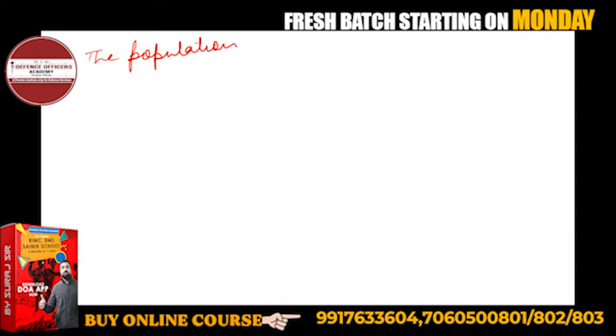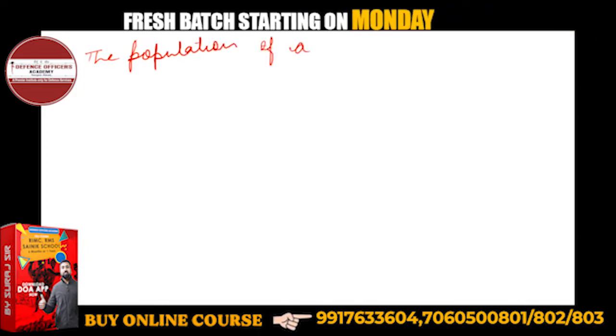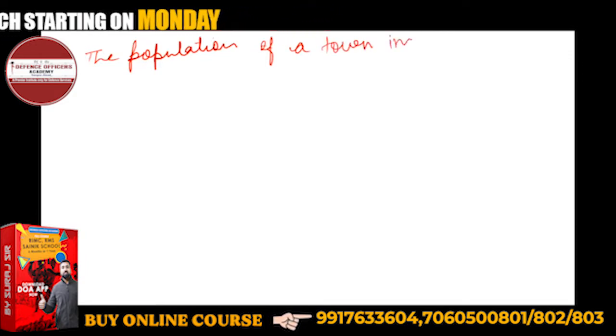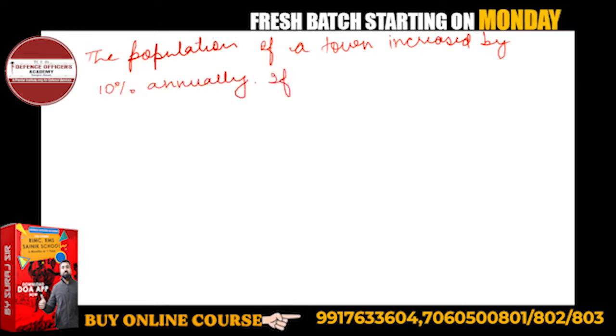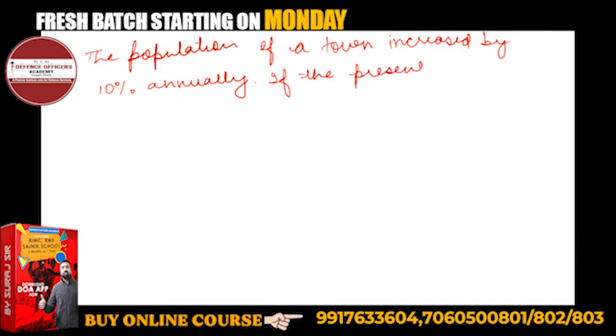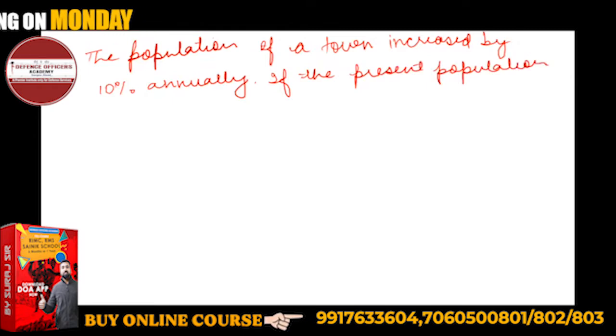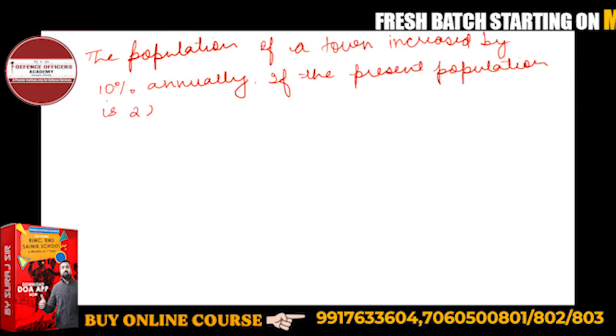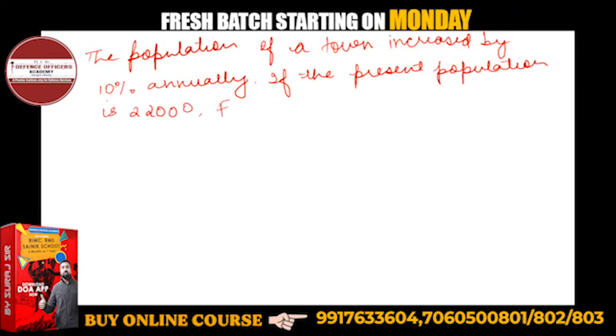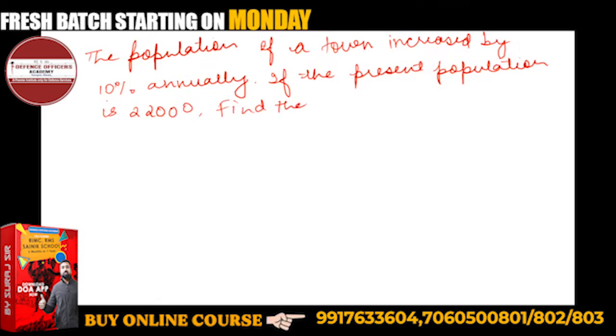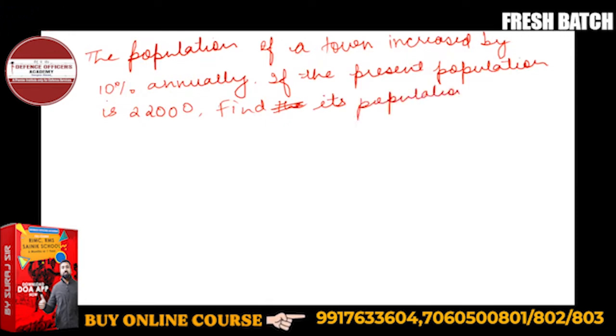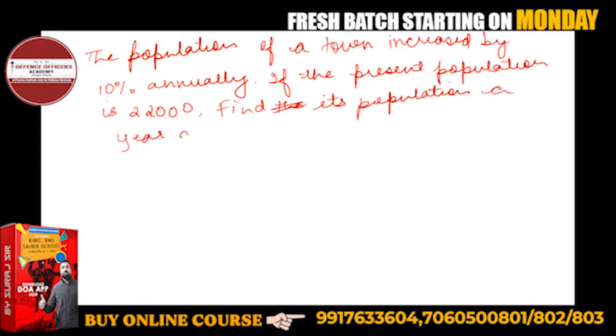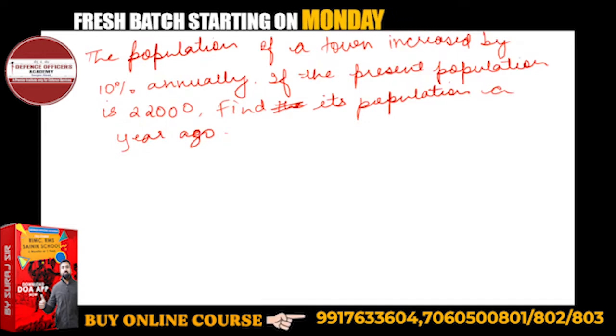The population of a town increases by 10%. If the present population is 22,000, you have to find its population a year ago. Find its population a year ago.